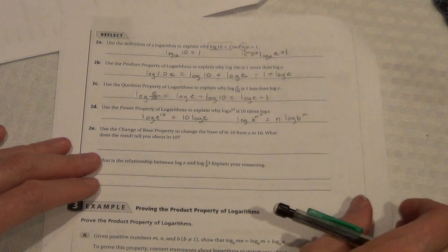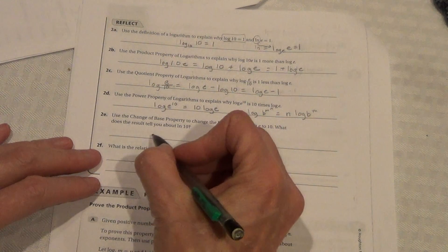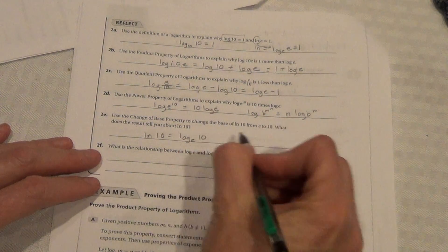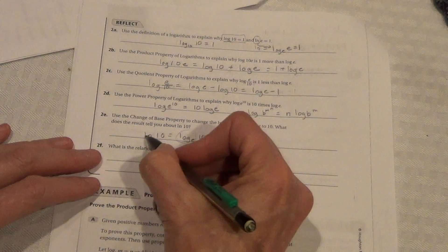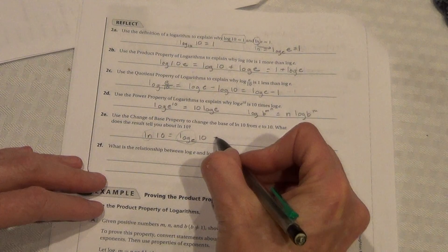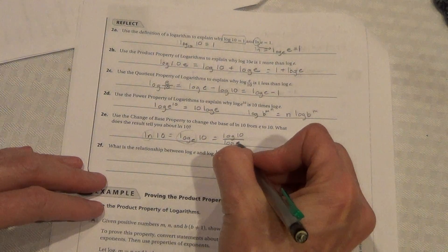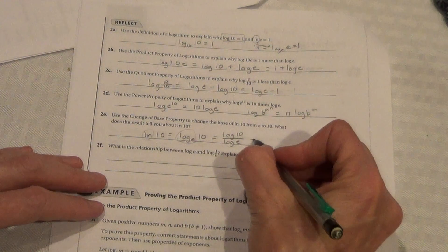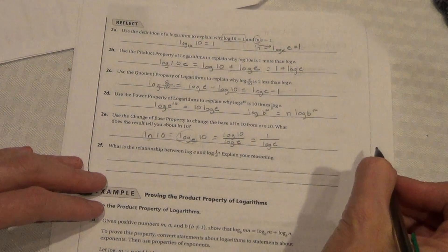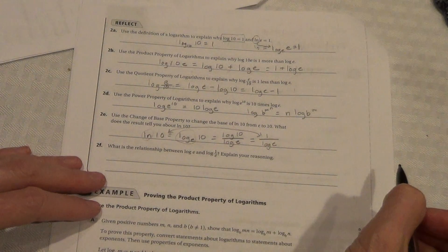Use the change of base property to change the base of ln 10 from e to 10. So, we would go, ln 10 equals log e of 10. Again, we discovered that on the front because ln is another name for, it equals log e. It's the abbreviation we use for log e. So, now we can go log 10 over log e. And we know that log 10 is equal to 1. So, 1 over log e. That's what that is. So, we just proved that.